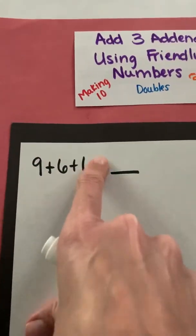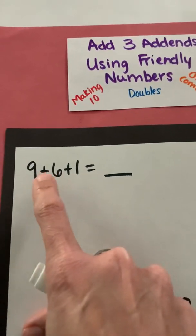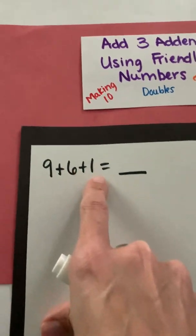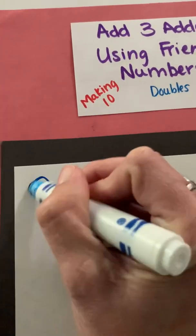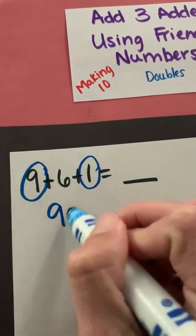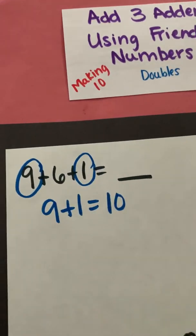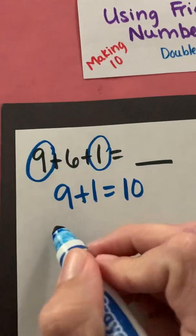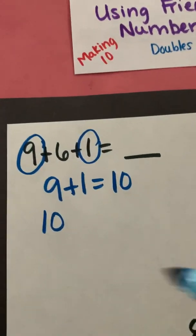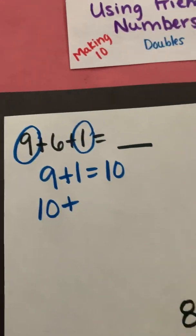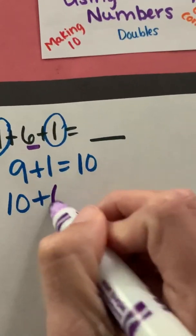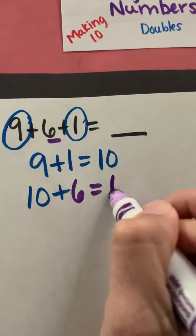I'm looking here and I don't see any doubles, but I do see a 10. I see a 9 and a 1. So I am going to add 9 plus 1 together first, which gives me 10. And then I'm going to take that 10 and add on the 6. And 10 plus 6 is 16.